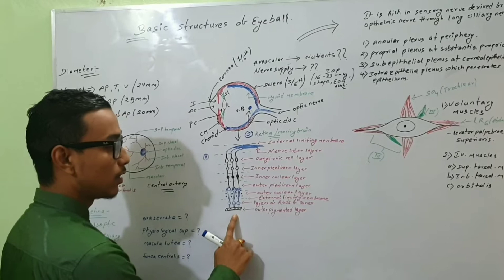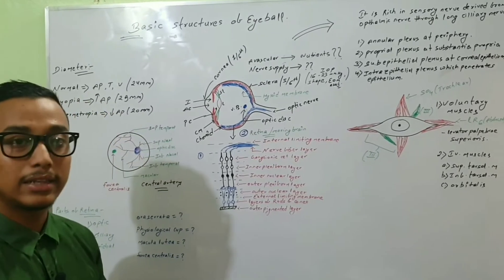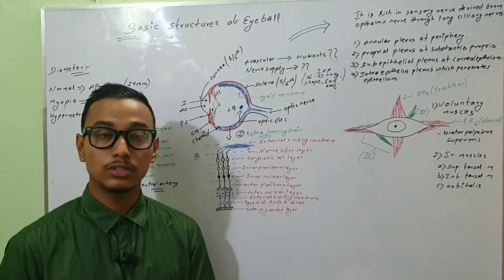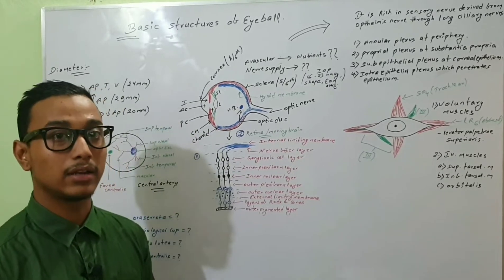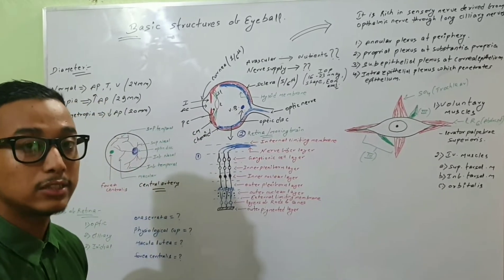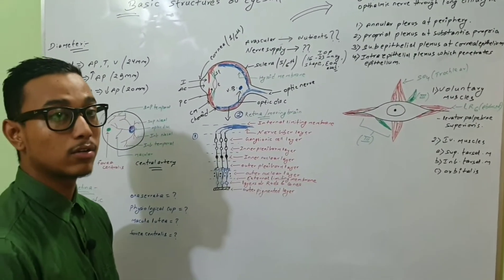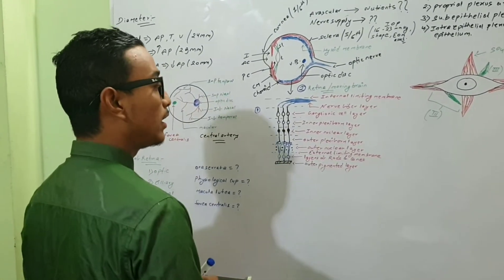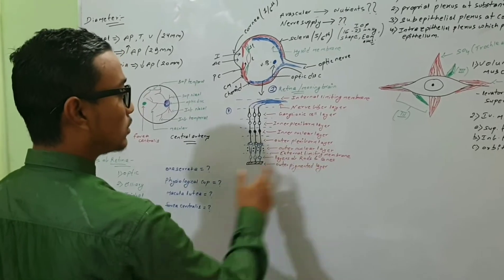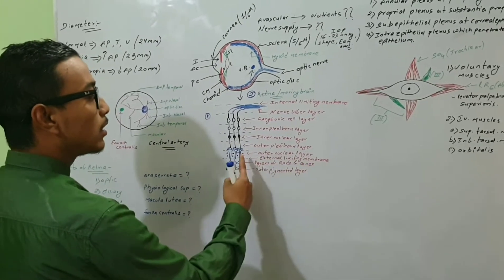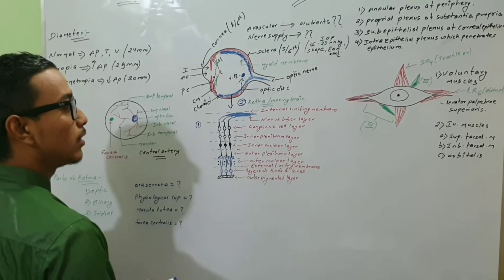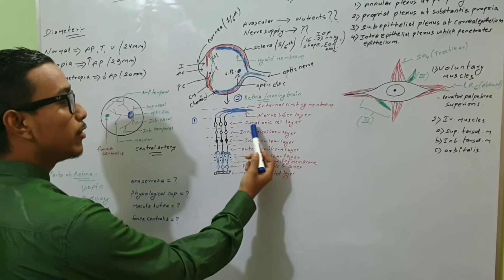The outermost layer is the pigmented layer, and inner to it is the layer of rods and cone cells. Rod cells are sensitive to dim light and are responsible for scotopic vision. Cone cells are color-providing cells responsible for photopic vision. Inner to the layer of rods and cones are the external limiting membrane, outer nuclear layer, outer plexiform layer, inner nuclear layer, and inner plexiform layer.